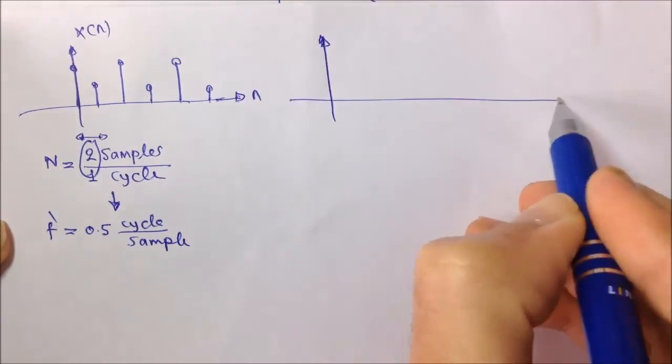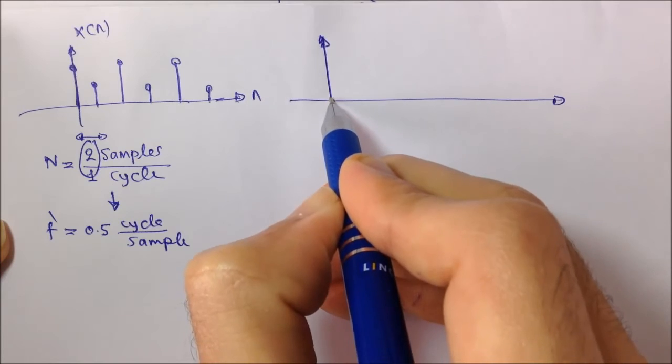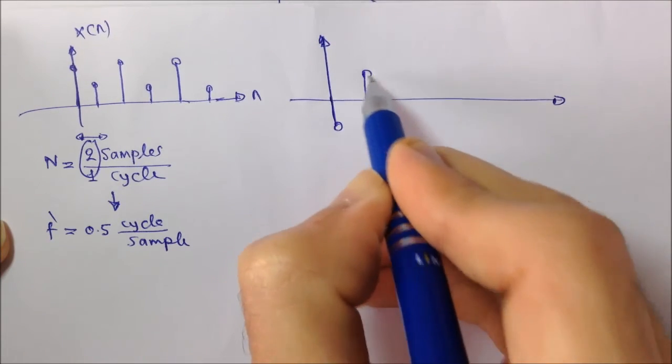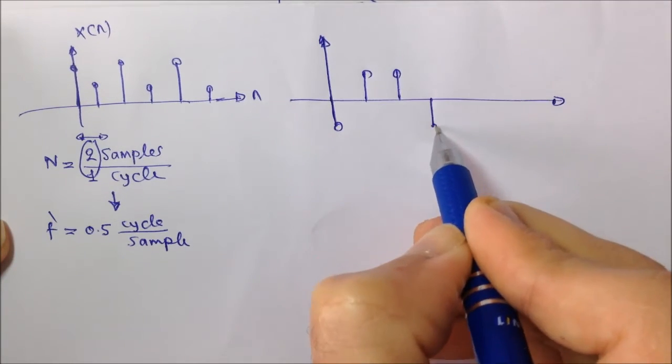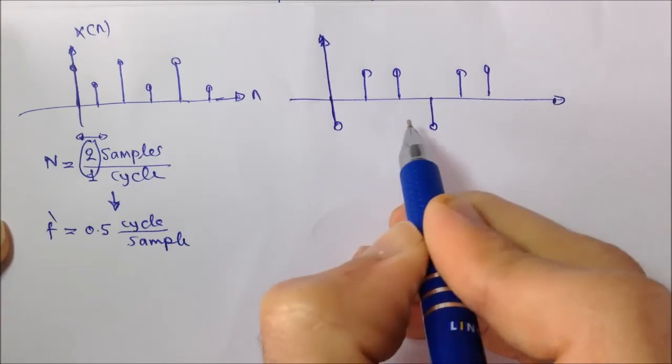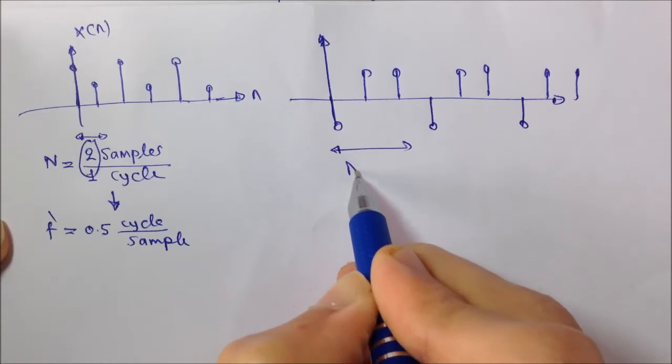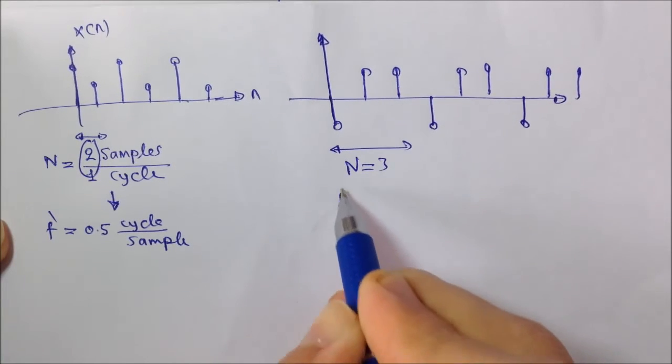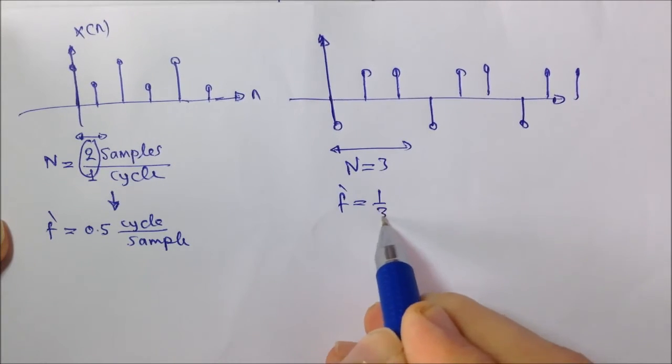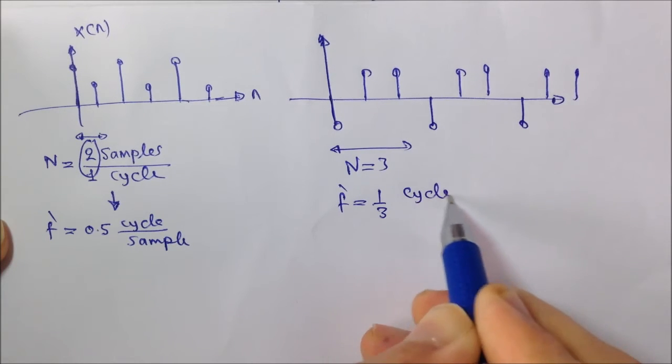Another one, like this: minus 1, plus 1, plus 1, minus 1, plus 1, plus 1, minus 1, plus 1, plus 1, and so on. So, n equal to 3, and then f prime equal to one third cycle per sample.